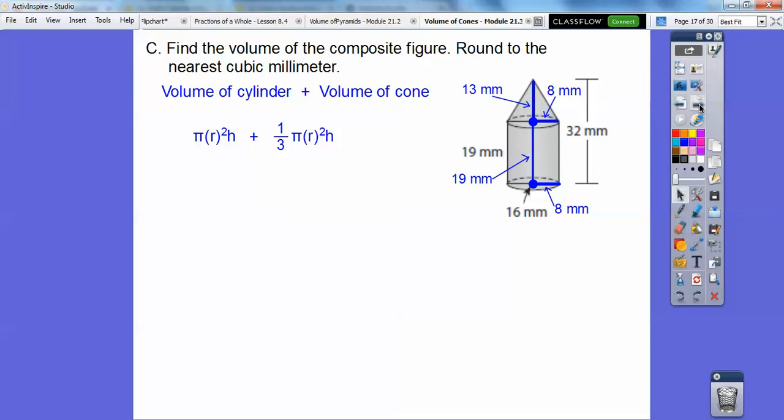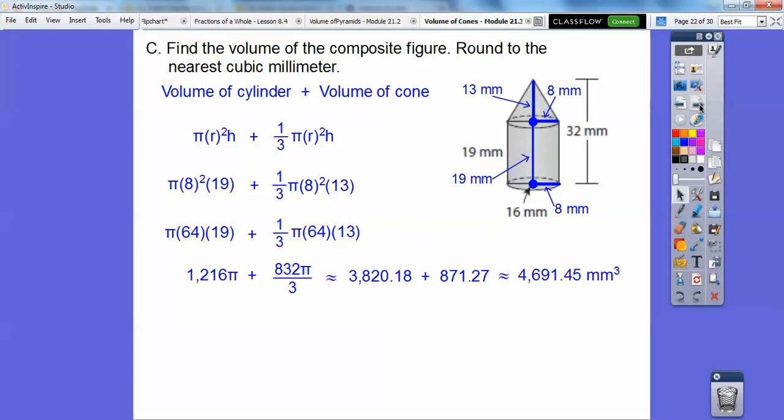All right, so I think we have everything there. So if we plug it all in and add them together, we get about, I get about that. Don't forget it's in cubic millimeters right there, so I get about 4,691.45 millimeters cubed. So the volume of the composite figure.